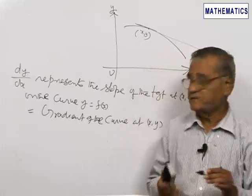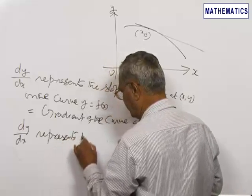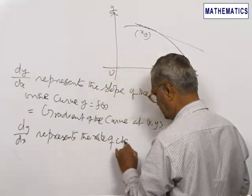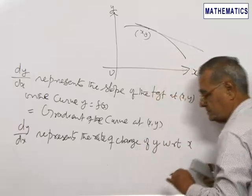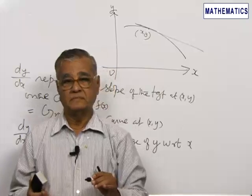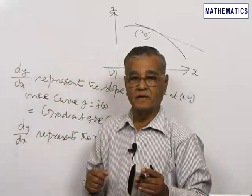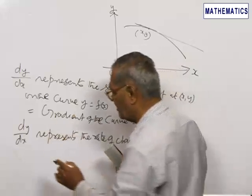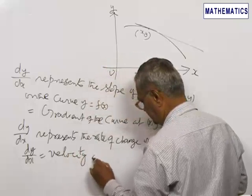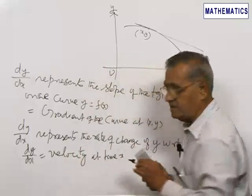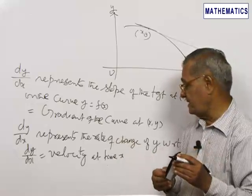What is the physical meaning of dy by dx? dy by dx represents the rate of change of y with respect to x. Suppose y is the distance travelled by a particle moving along a curve and x represents the time. Then dy by dx is the velocity at time x. If we write dx by dt, where x is the distance travelled and t is the time, then dx by dt represents the velocity at time t.